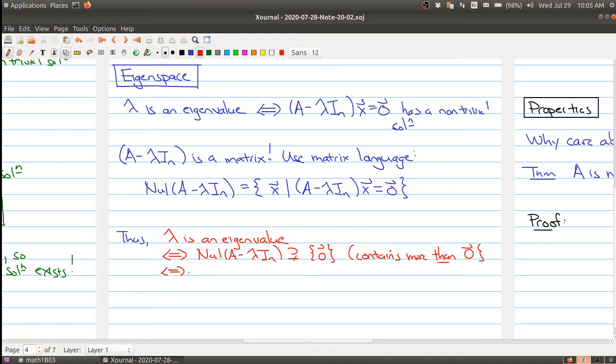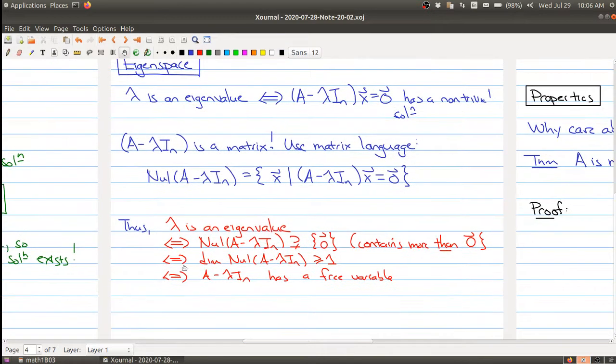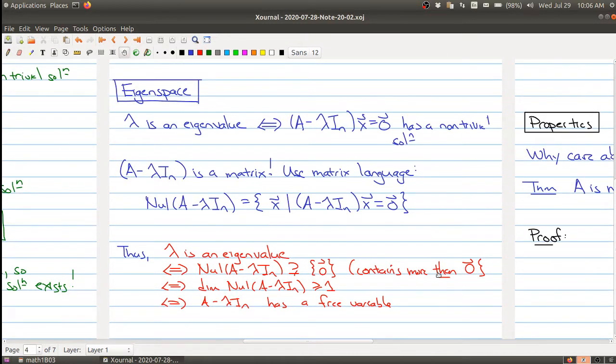But using our notion of dimension, this means that the dimension of the null space of my matrix has to be at least 1, greater than or equal to 1. And another way of thinking about this is that A minus lambda In has a free variable. So when you look at the matrix A minus lambda In, you get a free variable when you put it into row-reduced echelon form. So these are alternative ways of thinking about what an eigenvalue is doing.